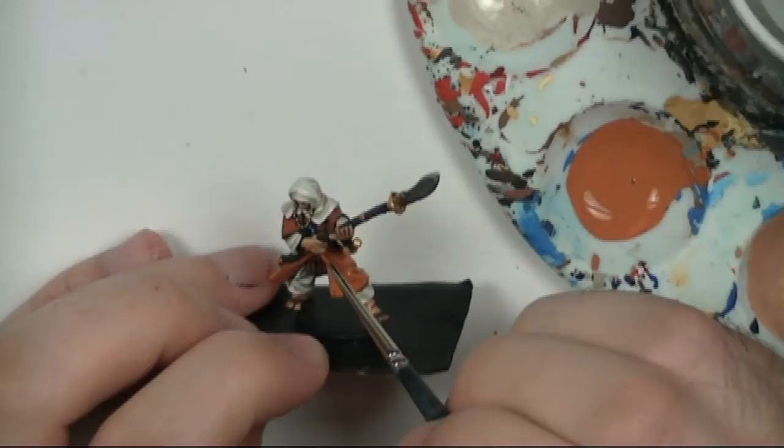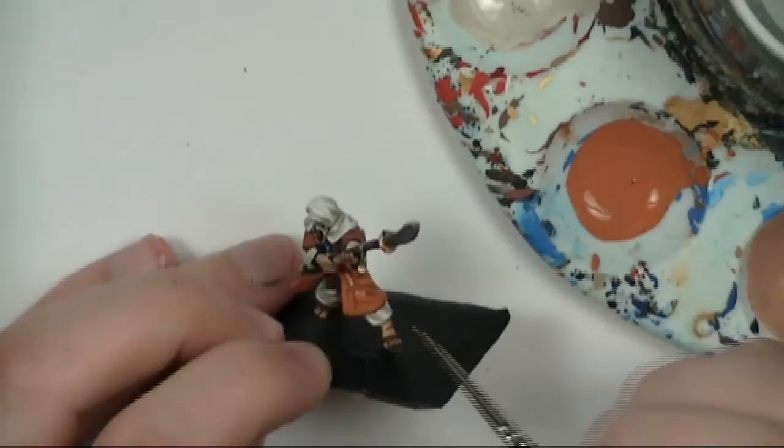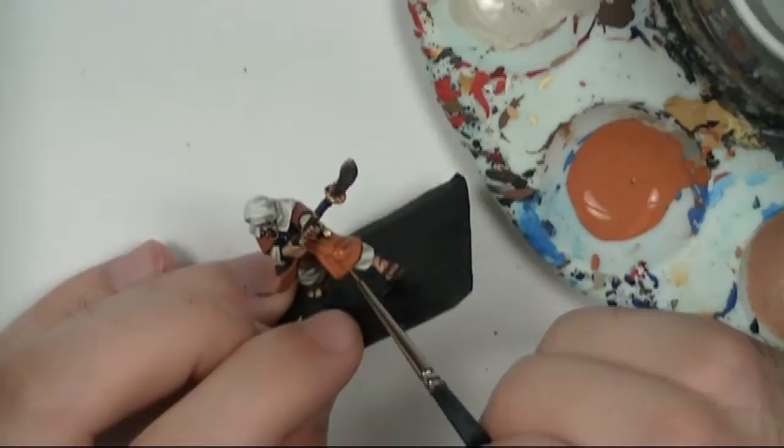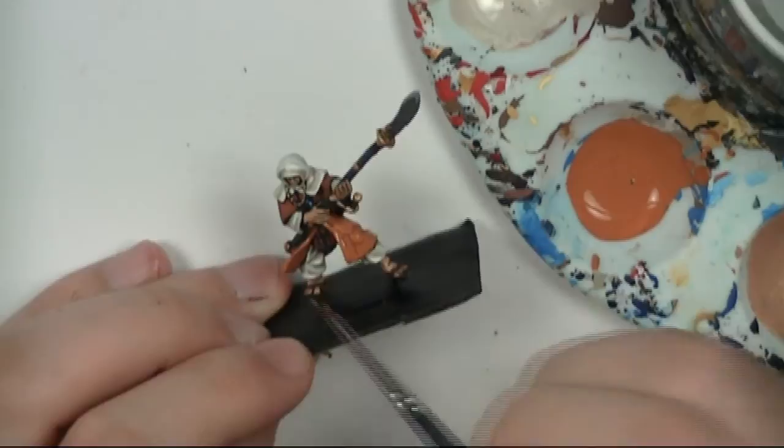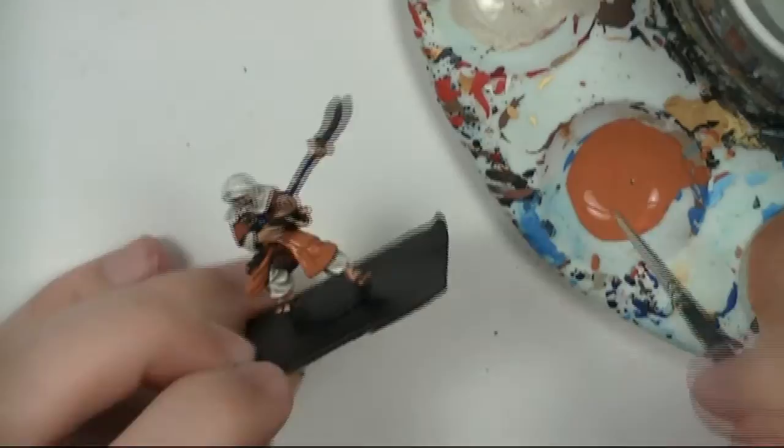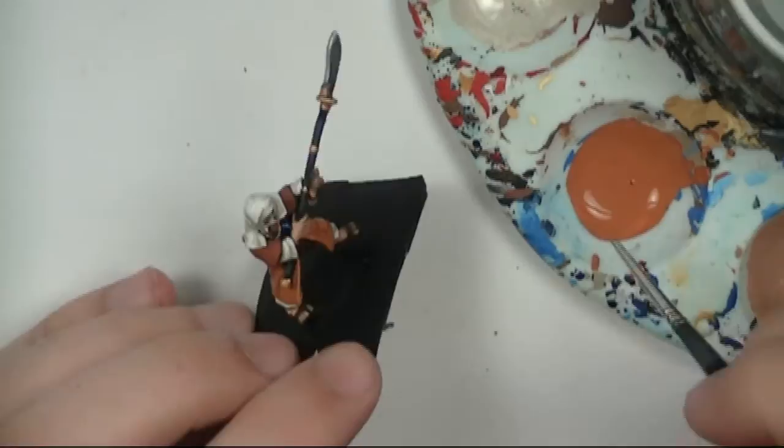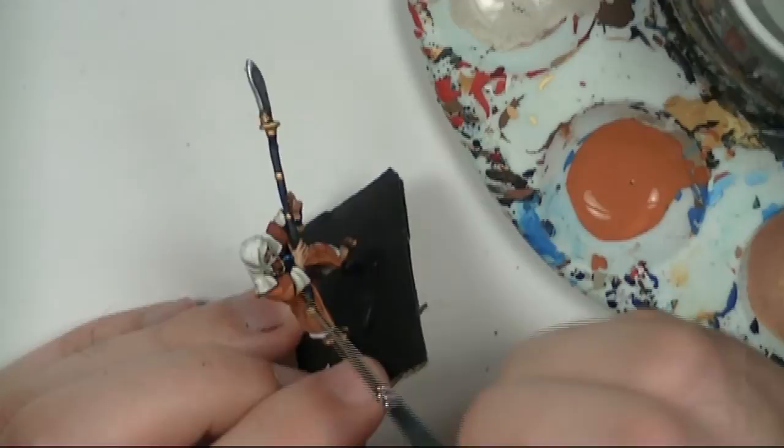If you haven't already seen the how to paint yellow tutorial, please check that out. In the how to paint yellow and how to paint orange videos, I'm basically only covering the colors that I want to achieve on the Sohei Warrior Monks. Obviously there are different variations of yellow and orange which I might cover in a separate tutorial later on, but for now we're just going for these quite pale, pastel-y colors.